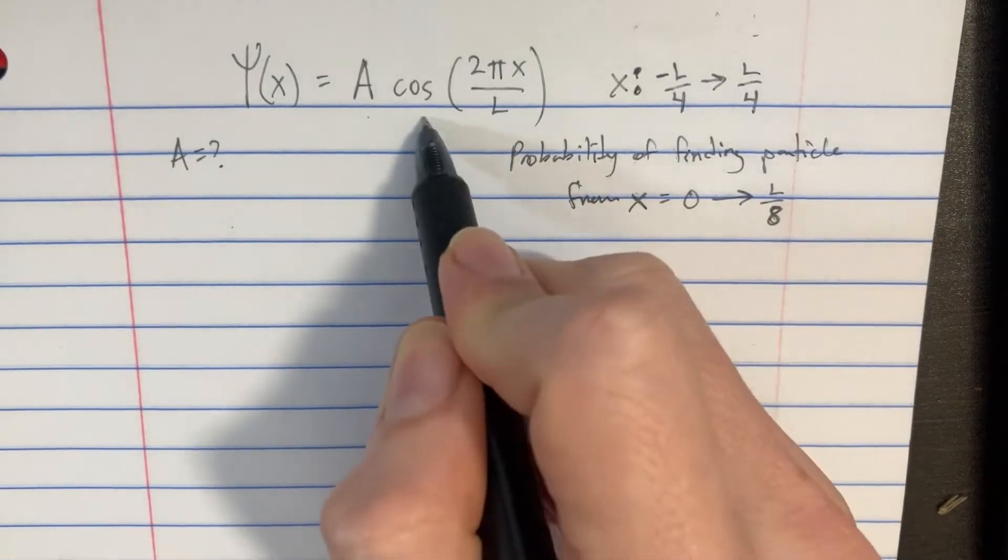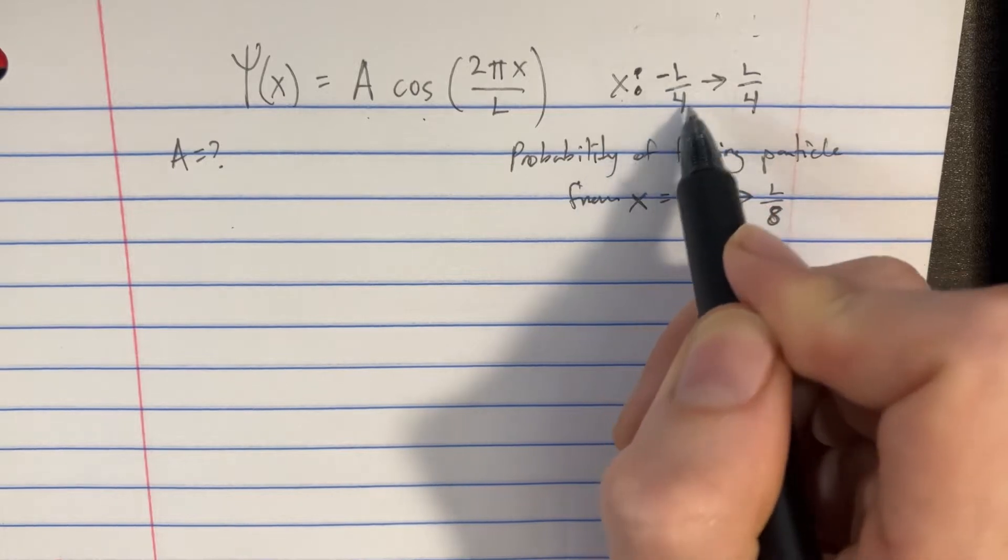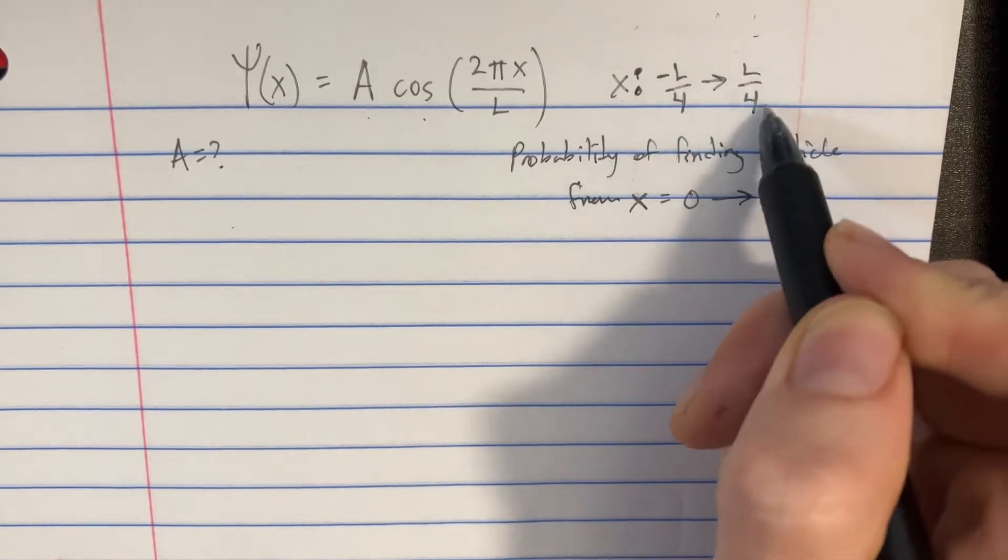This wave function is a cosine of 2πx over L, and it's defined for the x's negative L over 4 all the way to L over 4.